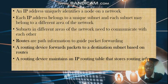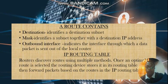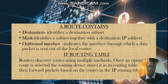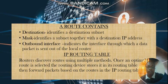Let us discuss what a route entails. A route has a destination, which is basically the destination subnet or destination network. Then we have a subnet mask, or mask, which identifies a subnet or network together with the destination IP address. We also have an output interface, which is the interface through which the data is sent out.